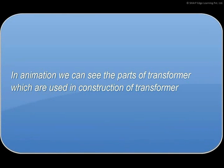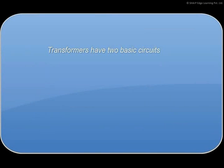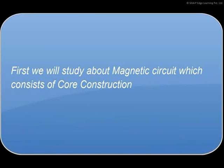In the animation, we can see the parts of the transformer which are used in its construction. Transformers have two basic circuits: magnetic circuit and electrical circuit. First, we will study about the magnetic circuit, which consists of core construction.